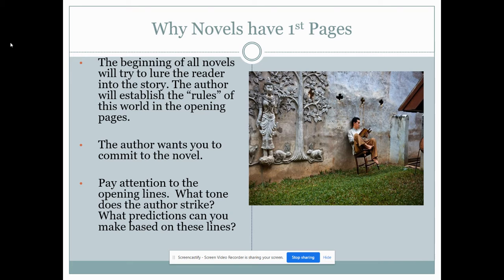Pay attention to those opening lines. What tone does the author strike? What predictions can you make? We see at the beginning of this book that we are dealing with children and then young adults. Where is Joyce going from here? What sorts of things will he have to say about the older people of Dublin?